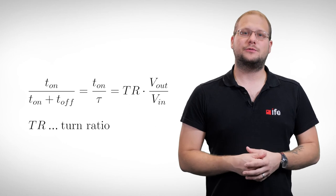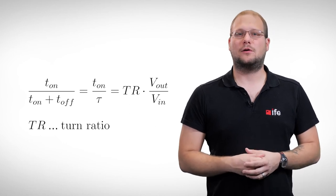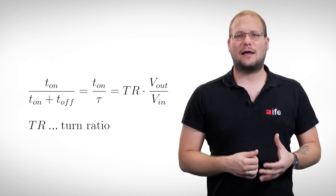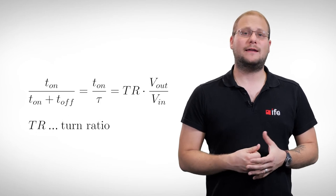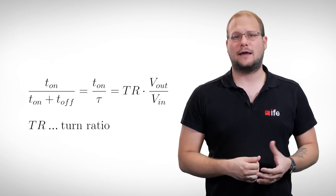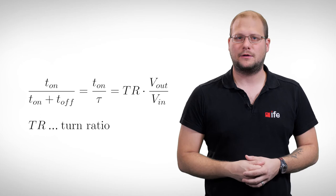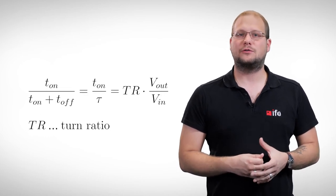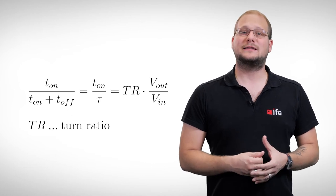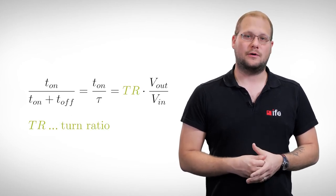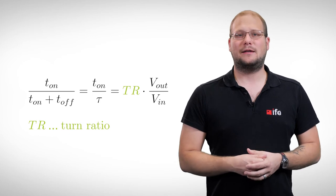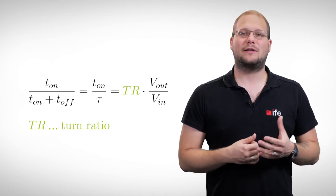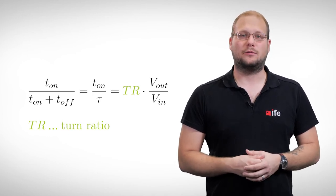The transistor switches on and the cycle starts all over again. We get a rather easy connection between input and output voltage via the duty cycle of the switching transistor. The formula is similar to the one we derived for the secondary switched mode power supplies. The difference is the turn ratio of the transformer. We can see that depending on that ratio, we can generate higher or lower voltages on the output.